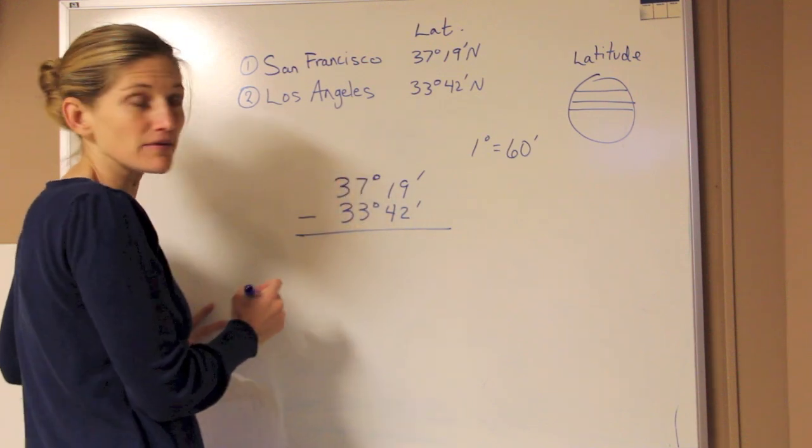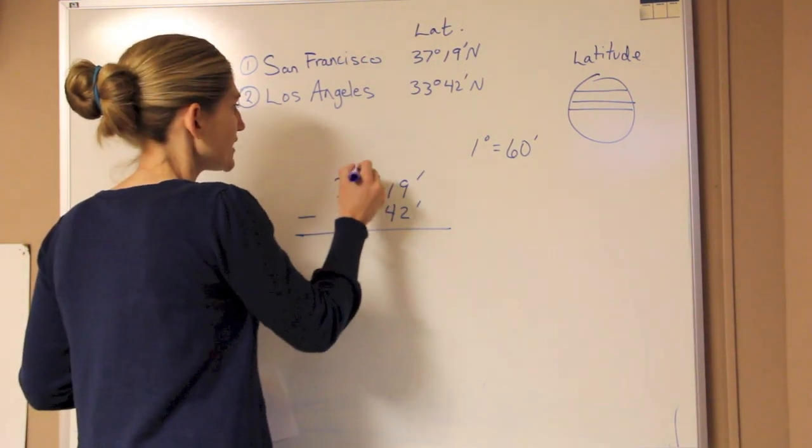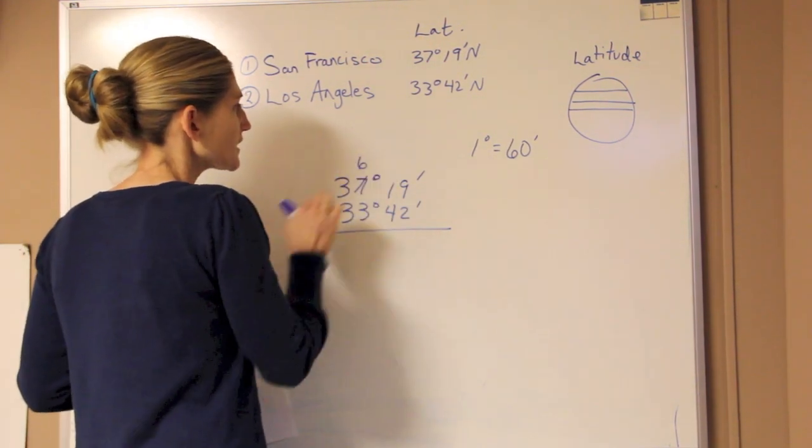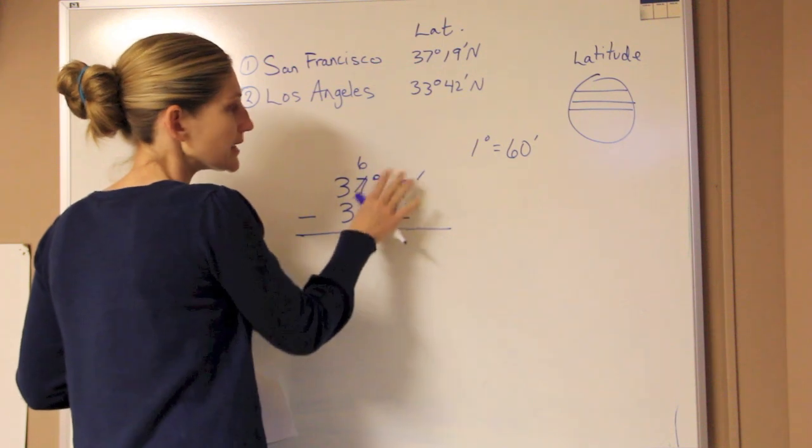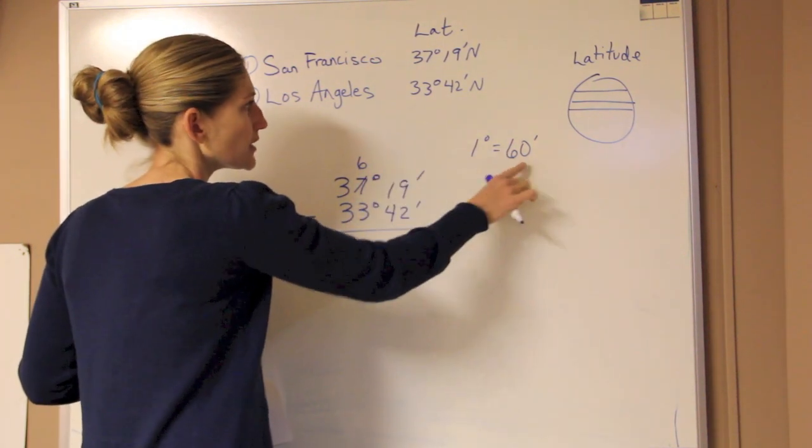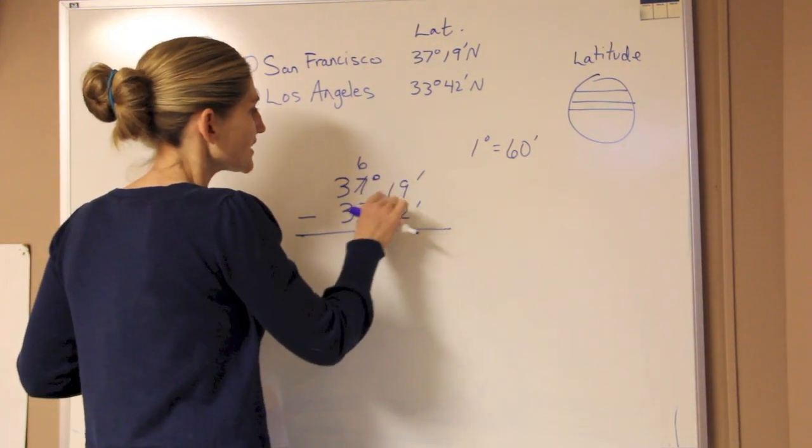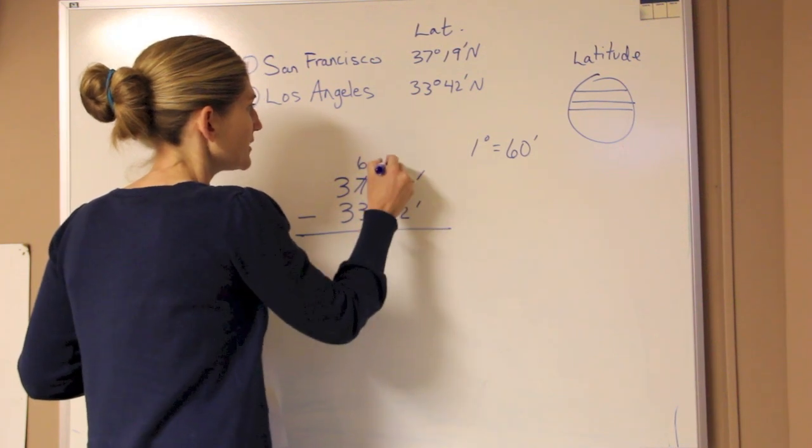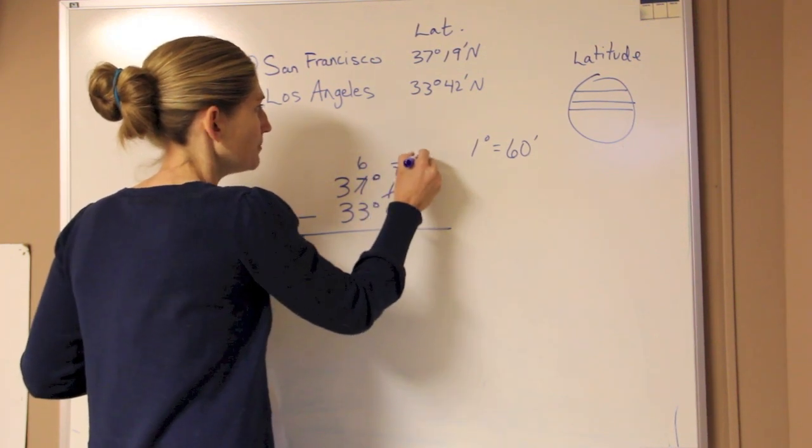So we're going to borrow one of the degrees. We're going to just cross out the 7. This is going to become a 6, and we're going to put 60 more minutes over on this side because for every degree, there are 60 minutes. So this 19 is going to become 79 minutes.